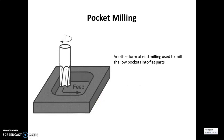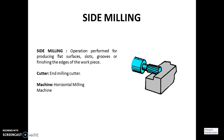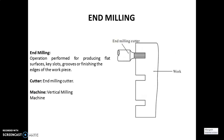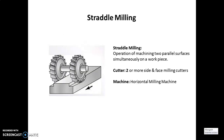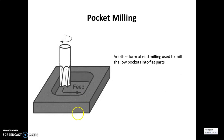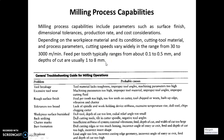Next is pocket milling. It is similar to end milling and is used to prepare slots, key slots, and similar profiles. Shallow pockets into flat parts can be developed, similar to the end milling operation. So all these were the different types of milling operations.